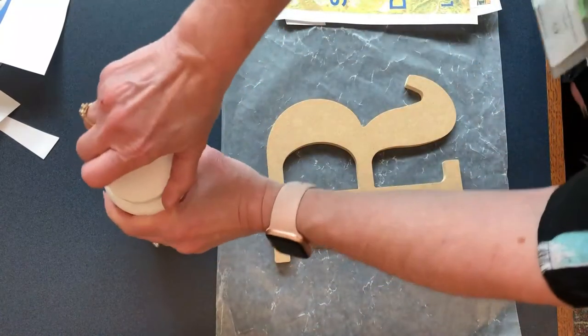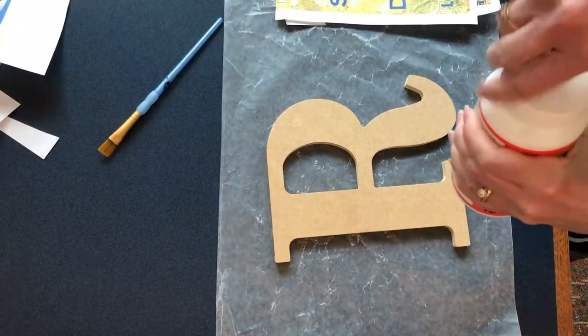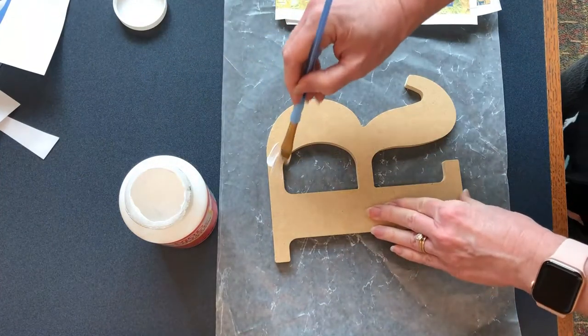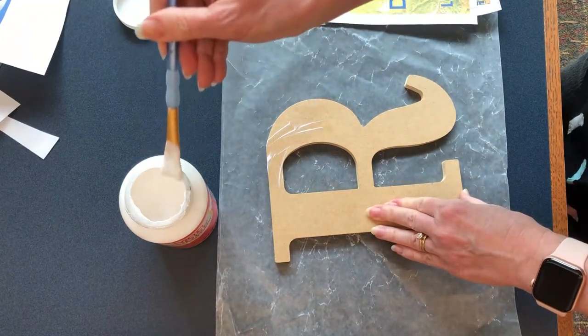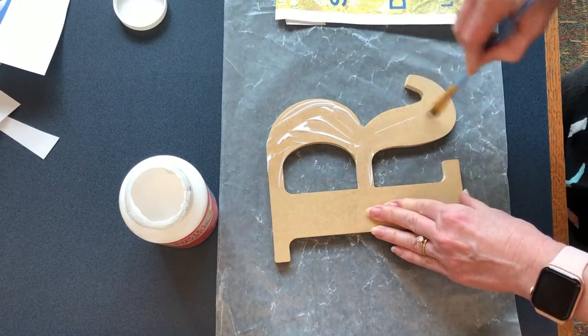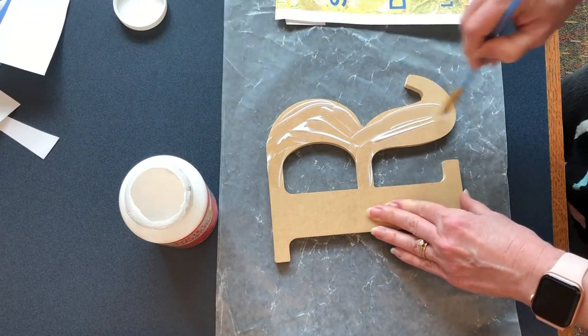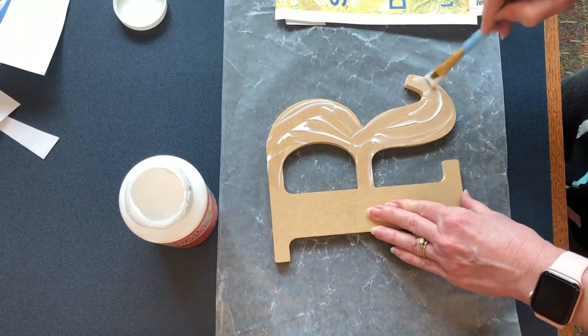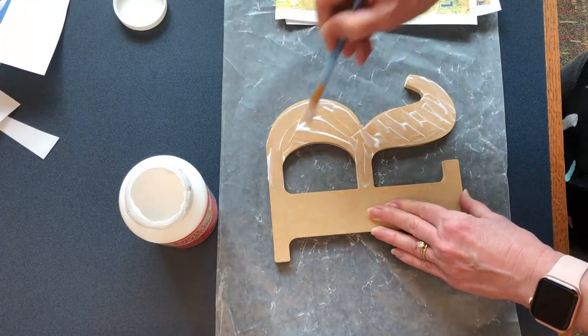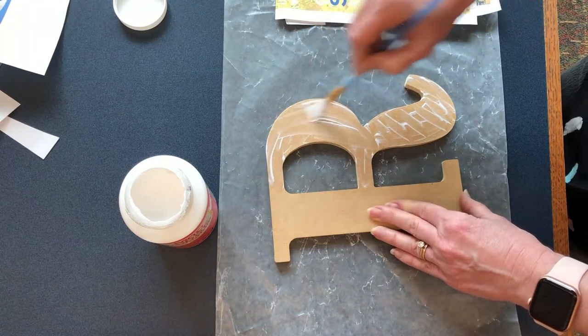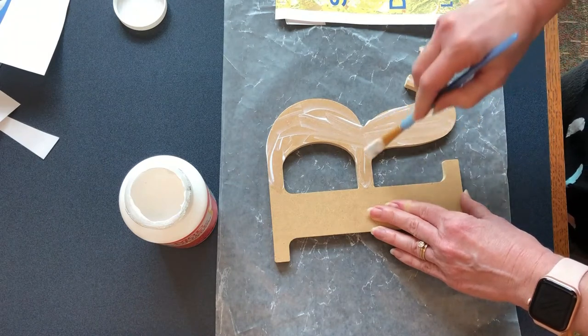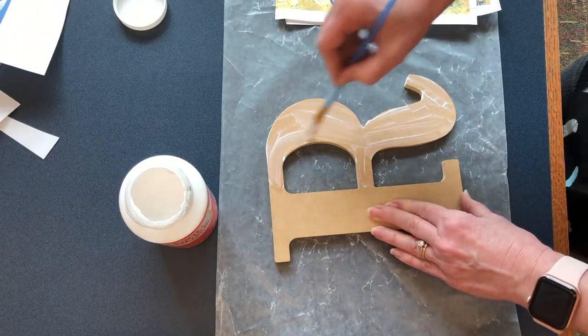So now we're going to take the Mod Podge and you're gonna paint a layer on the letter, just the front. You don't have to worry about the sides right now. Try not to get a lot of globs so it doesn't have, so it's nice and smooth, a smooth surface.